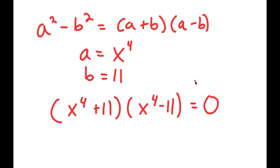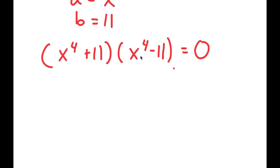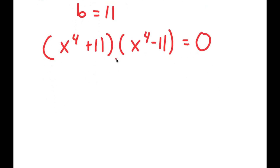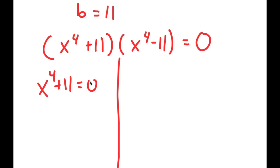From here I get two equations: x to the power of 4 plus 11 equals 0, and x to the power of 4 minus 11 equals 0.